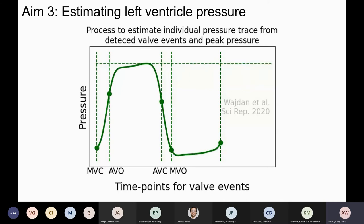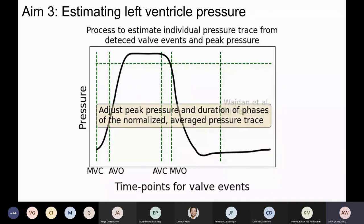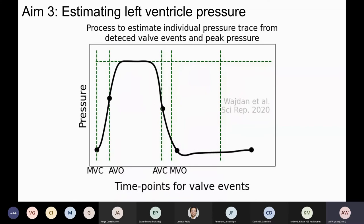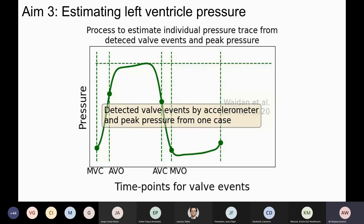So the green one represents the actual measured pressure trace, while the black one represents our estimated one. At this point, the black one is the estimated pressure trace, while the green one is the actual measured pressure trace. And you can see they're pretty close to each other.